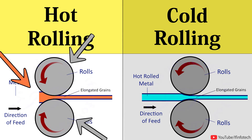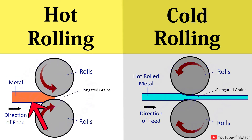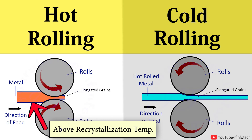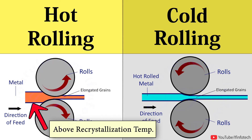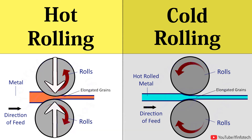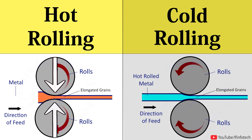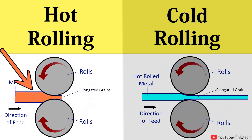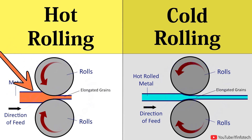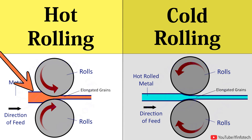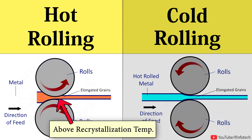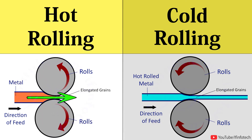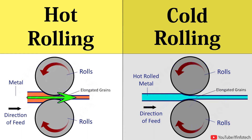In hot rolling process, temperature is kept at above recrystallization temperature. In this process, space between rolls is adjusted and is always less than thickness of metal being fed. When metal passes through rolls, there is change in its grain structure. The recrystallization temperature prevents metal from work hardening, and due to this, hot rolled metal does not show work hardening effect.